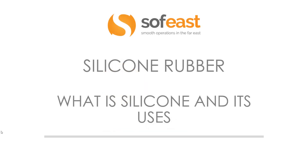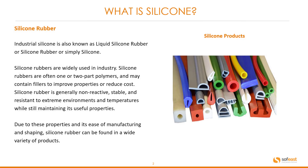Welcome to the first video in the silicone rubber series: what is silicone and its uses? Industrial silicone is also known as liquid silicone rubber, LSR, or simply silicone rubber. Silicone rubbers are widely used in industry and are often one or two part polymers, and may contain fillers to improve properties or reduce cost. Silicone rubber is generally non-reactive, stable, and resistant to extreme environments and temperatures while still maintaining its useful properties. Due to these properties and its ease of manufacturing and shaping, silicone rubber can be found in a wide variety of products.